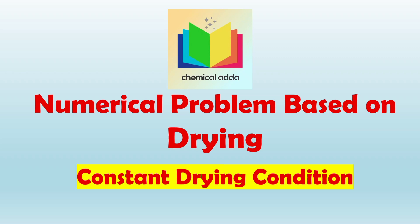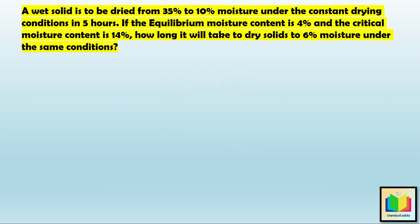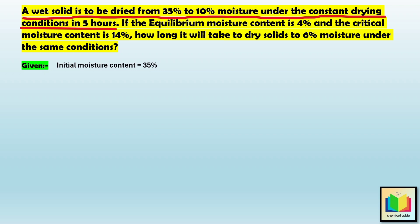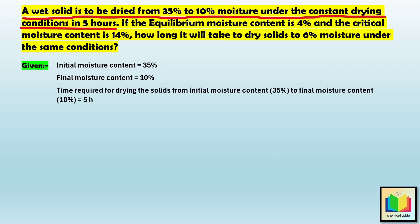Make sure to watch this video till the end. First, let's understand what is given in the example. In the example, we are given that a wet solid is to be dried from 35% to 10% moisture under the constant drying conditions in 5 hours. Which means that the initial moisture content on the wet basis is equal to 35%, the final moisture content is equal to 10%, and the time required for drying the solids from 35% to 10% moisture content is equal to 5 hours.